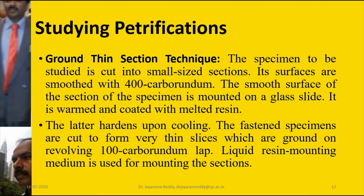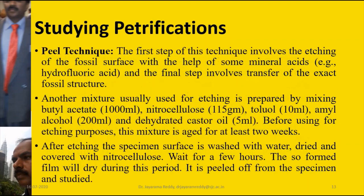In the ground thin section technique, the rock is cut into a thin section. The slice is further polished using carborundum powder of different grades — first 400 grade, then 300, then 200, and finally 100. A thin section is prepared and mounted using a resin or Canada balsam on a slide, then studied under a microscope. This is the ground thin section technique.